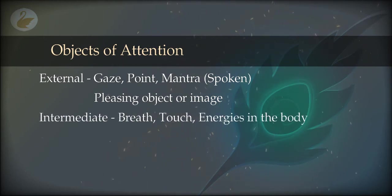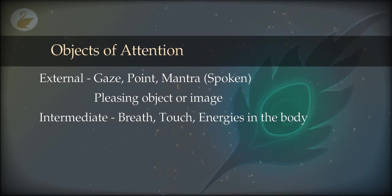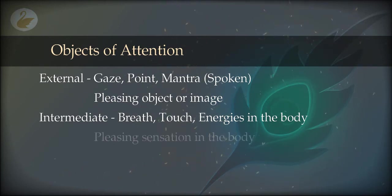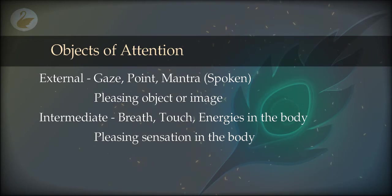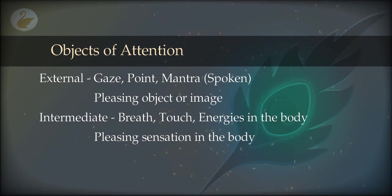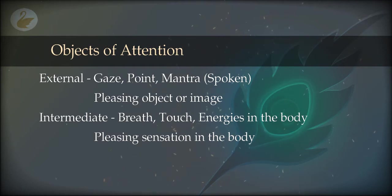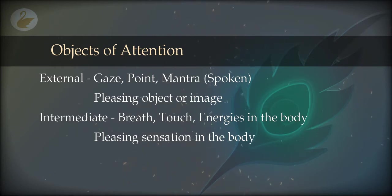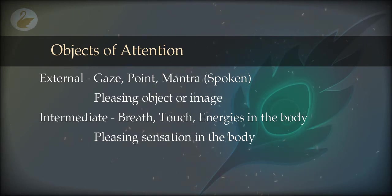Once you master external attention, you can shift to the intermediate kind where you do not focus on an external object. You withdraw your focus from everything external and focus on something in your body. The most natural thing to focus on is the breathing — watch your breath coming and going. Do not try to control it. If the breathing is too fast or too slow, or you just ran a marathon, that is not a good time to practice.